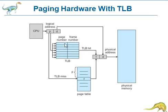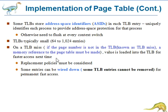If the TLB is already full of entries, the OS must select one for replacement. Some TLBs store address space identifiers, also called ASIDs, in each TLB entry. These uniquely identify each process to provide address space protection for that process; otherwise, the TLB needs to be flushed at every context switch.